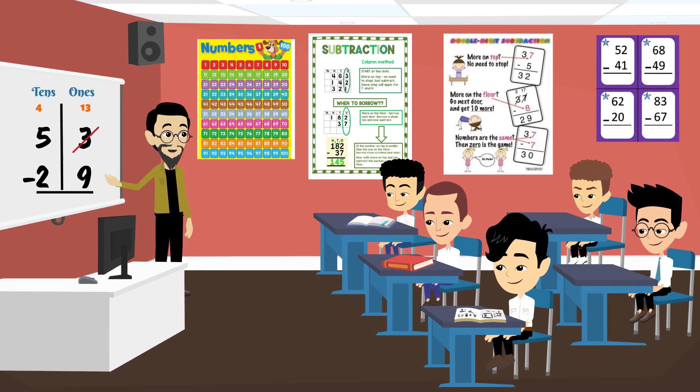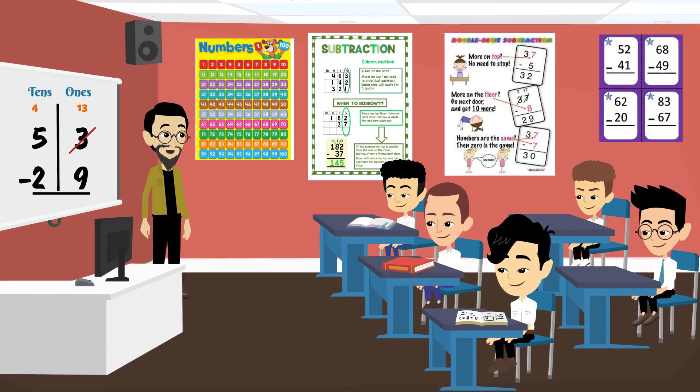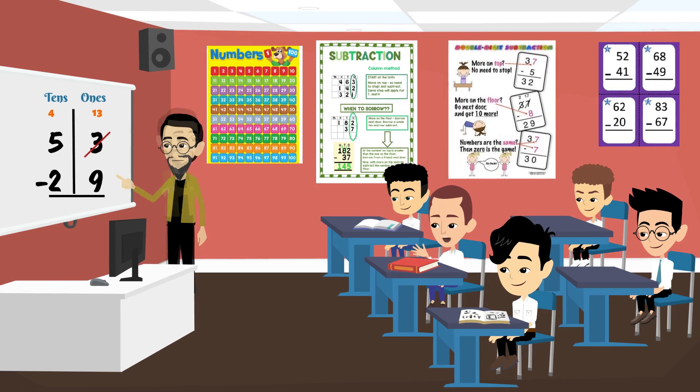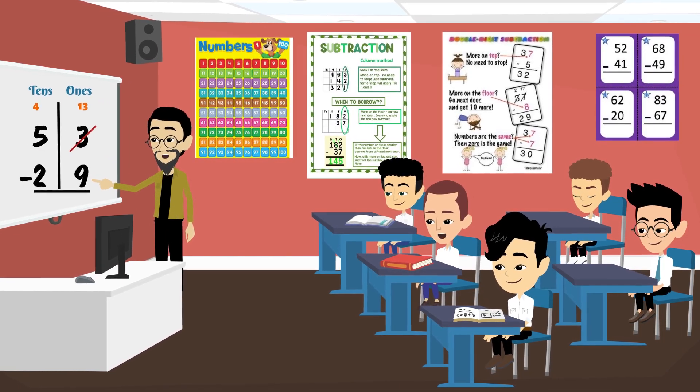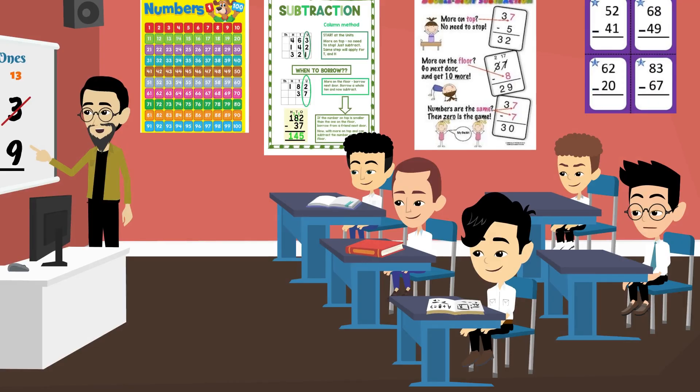Now, we have 13 in the one's place. Let's do the subtraction. 13 minus 9. What do we get? 4. Great job. Now, let's move to the 10's place. We have 4 minus 2. What is that? That's 2. Fantastic.